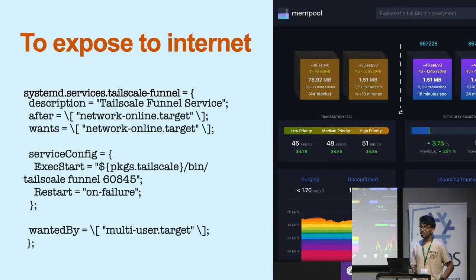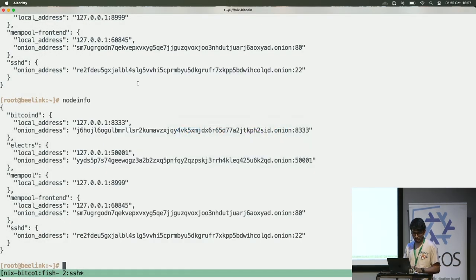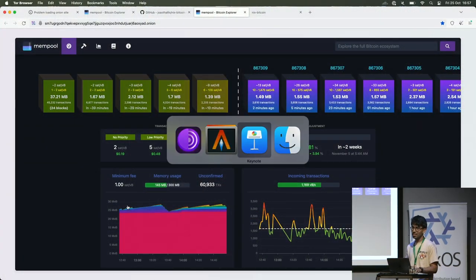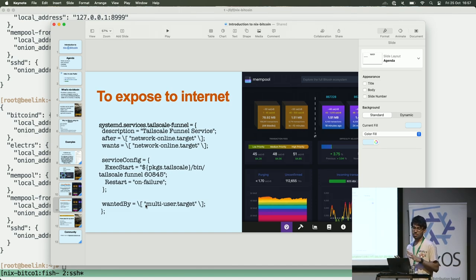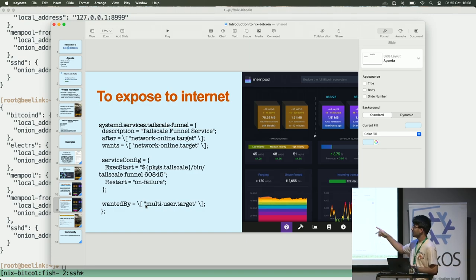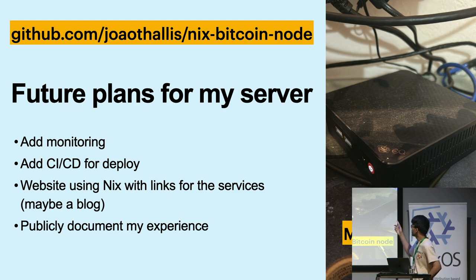The next slide shows how to expose to the internet — if you copy this code, here is port 60845. It will expose to the internet so everyone can access it outside Tor. There are some security concerns because mempool has some configurations — if you want to expose to internet you need to add some configurations to prevent issues. You can expose any other services that have a local address here, not just mempool.